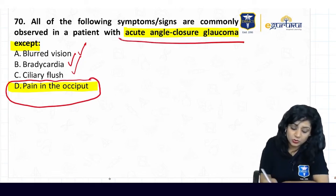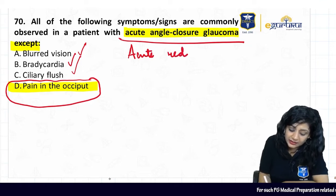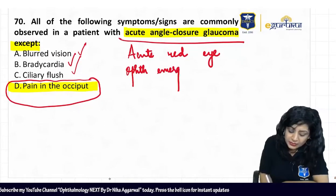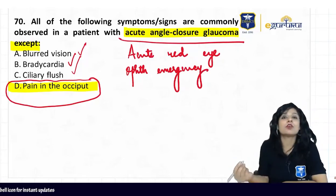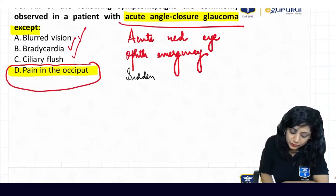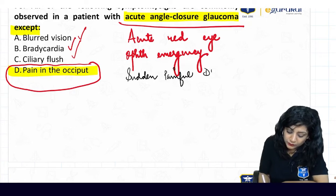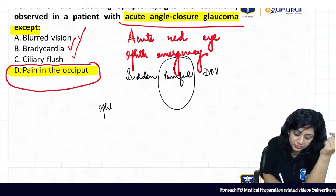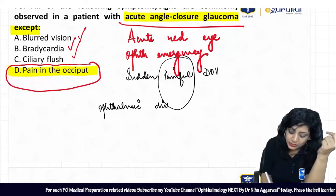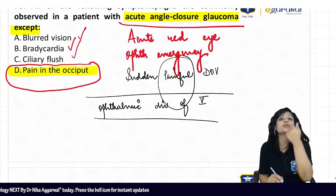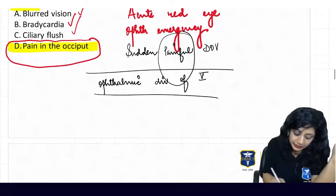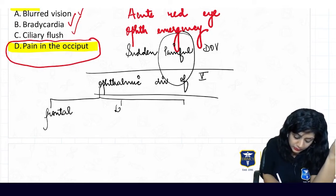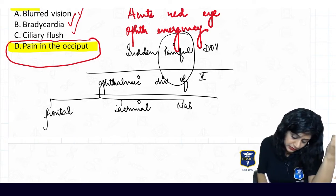Acute angle closure glaucoma is a case of acute red eye and it is an ophthalmic emergency. We do not have many emergencies in ophthalmology, but when they occur they are truly emergent. The patient presents with sudden painful diminution of vision. The nerve supply of the cornea is the ophthalmic division of the trigeminal nerve, so pain occurs in the distribution of that division — not the occiput. The ophthalmic division has three parts: frontal, lacrimal, and nasociliary.